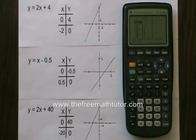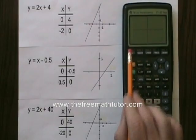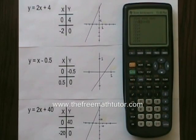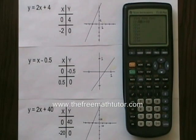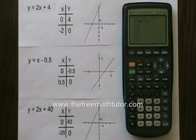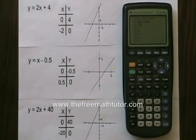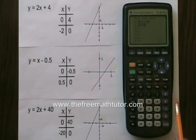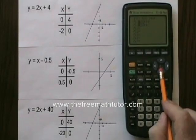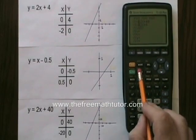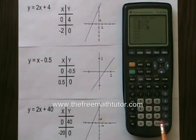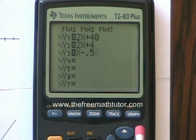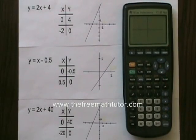Next we are going to look at what it looks like when we graph all three of these lines in the calculator at once. I go into my y equals interface. I already have y equals 2x plus 40 entered. So I am pressing the down arrow and I am going to enter the other two equations. 2x plus 4 down arrow x minus 0.5. And when I hit graph, all three of these lines are going onto the graph at once.